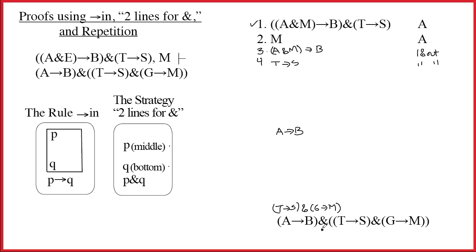In effect, what we're doing is saying we have to do two proofs. We have to prove A arrow B, here's the space to do that. Then we have to prove T arrow S and G arrow M, here's the space to do that. We have finished two lines for ampersand. This is all that it is. No line numbers, no justifications. We're just breaking up the conclusion into two halves.